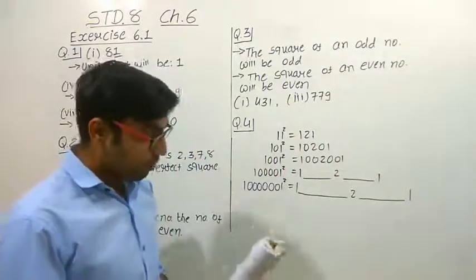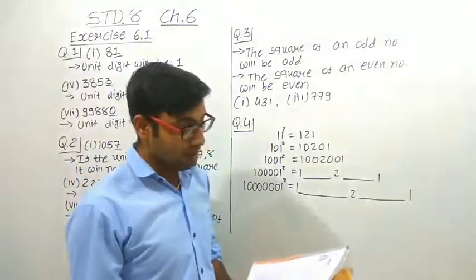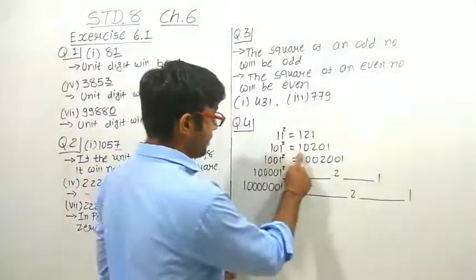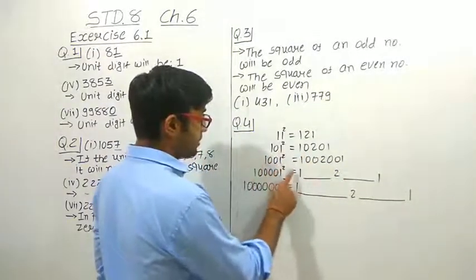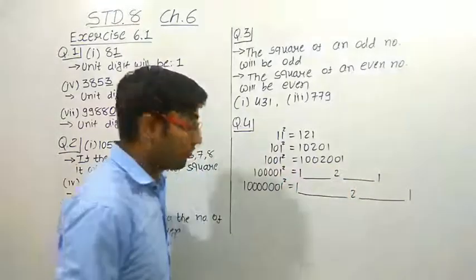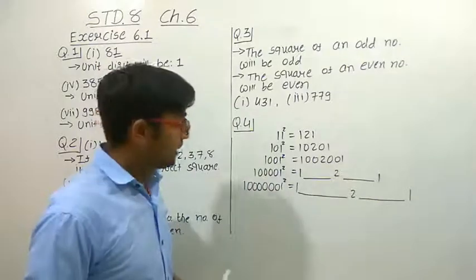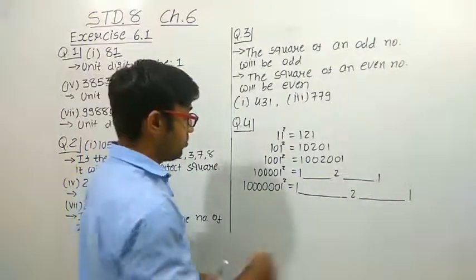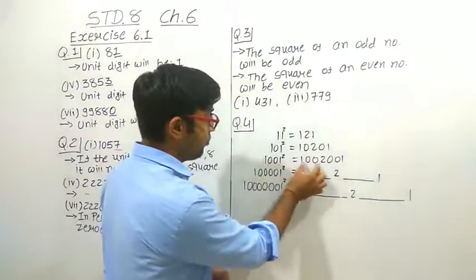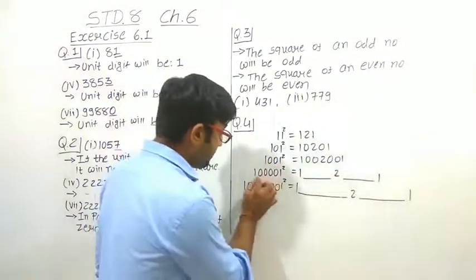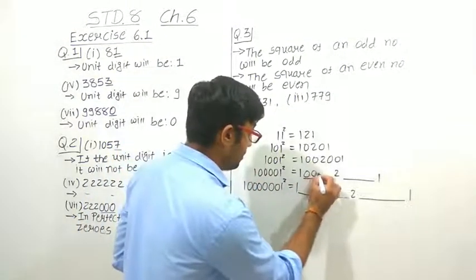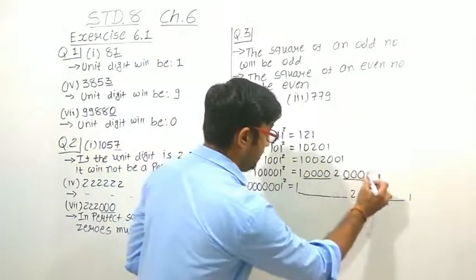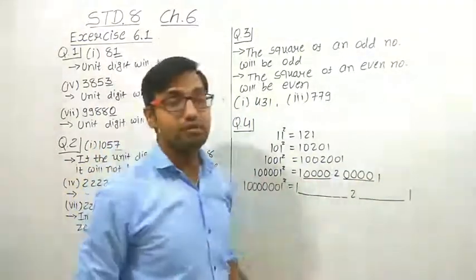Now let us explain question number 4: observe the following pattern and find the missing digits. We have given: 11 squared is 121, 101 squared is 10201, 1001 squared is 1002001. Now for 1 followed by 4 zeros and then 1 squared — we can see that whenever there are 2 zeros, we put 2 zeros before and after the 2 in the middle. Here there are 4 zeros, so we put 4 zeros on each side: 1, 0000, 2, 0000, 1.